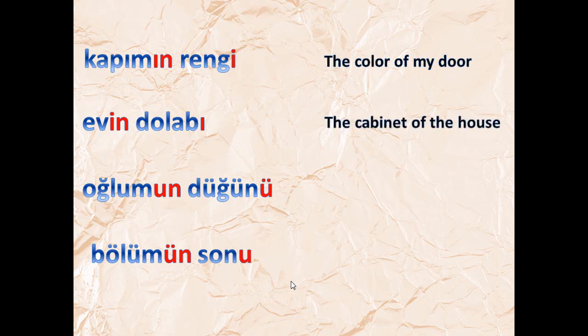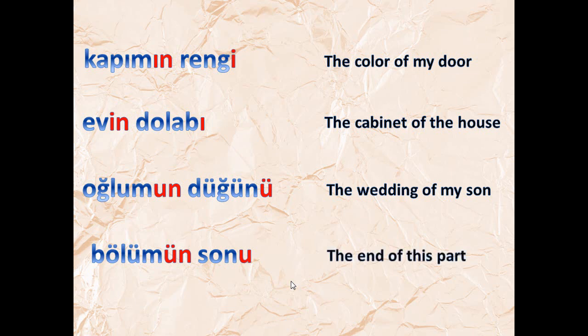More examples: 'Kapımın rengi' — the color of my door. 'Evin dolabı' — the cabinet of the house. 'Okulun müdürünün gururu' — the manager's pride of the school. 'Bölümün sonu' — the end of this part, like the end of an episode of a series.